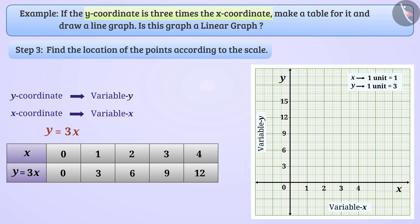Step 3: We will find the location of points according to the scale. When x = 0, y = 0, so we draw a point at the origin. When x = 1, y = 3, so we move 1 unit to the right and 1 unit upward to mark the coordinate (1, 3). Similarly, when x = 2, we move 2 units right and 2 units upward to place the coordinate (2, 6). We will also mark the remaining coordinates in this way.